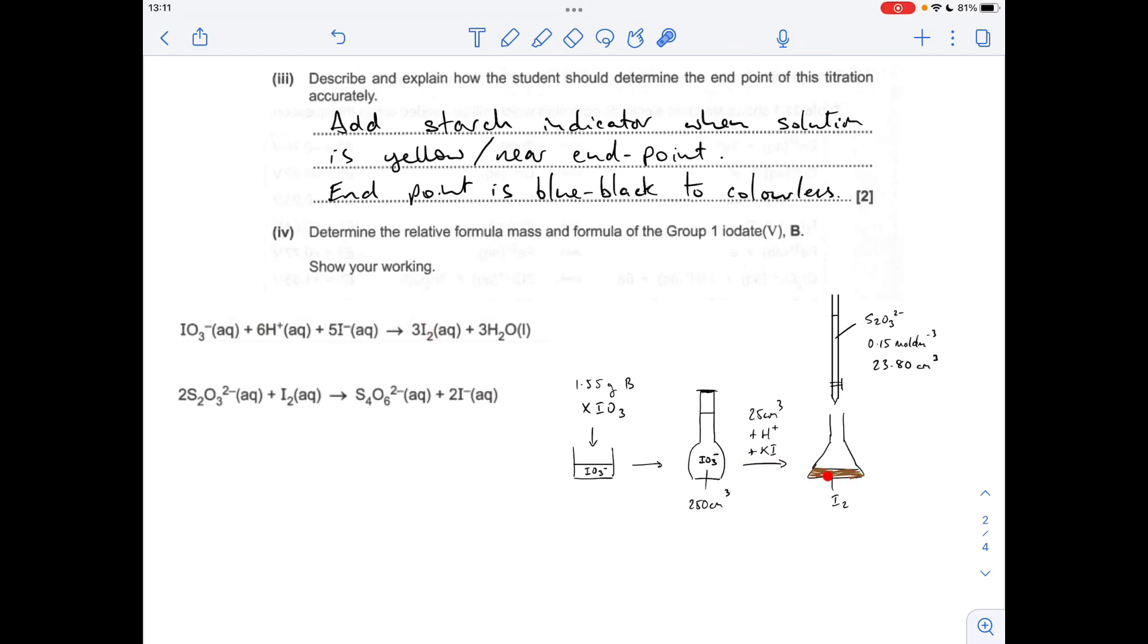This conical flask will be brown in color. As the thiosulfate goes in, it reacts with the iodine and gets less and less brown, so it actually starts becoming yellow.